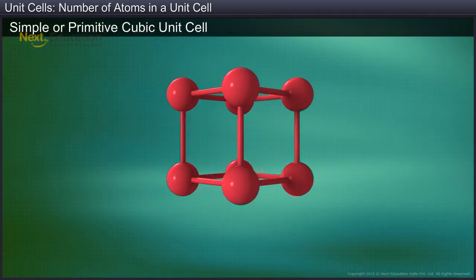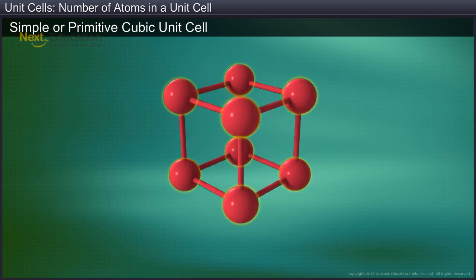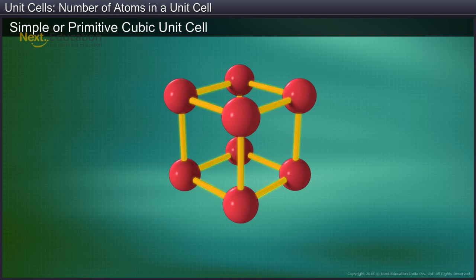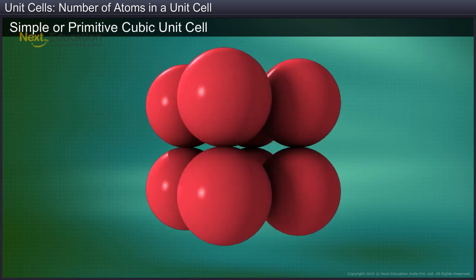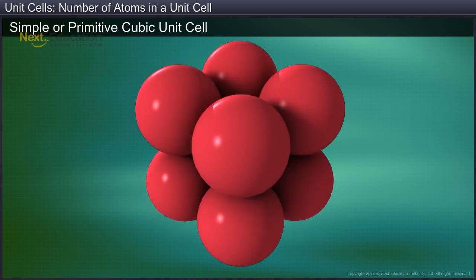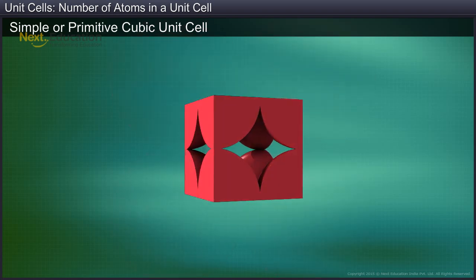Let's start with a simple or primitive cubic lattice. A simple cubic lattice consists of eight atoms at the eight corners of a cube. In the open structure shown here, the distances between the atoms are greatly exaggerated. In reality, the atoms are packed much more closely together, as shown in the space-filling model here. The space-filling model shows that the atoms touch along the edges of the cell. By considering the portion of atoms inside the cell boundary, we can generate a unit cell of a simple cubic lattice.